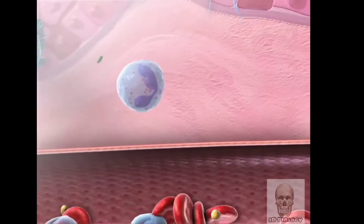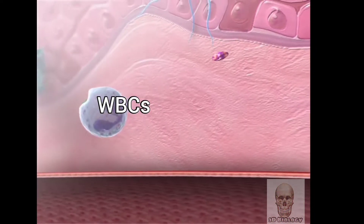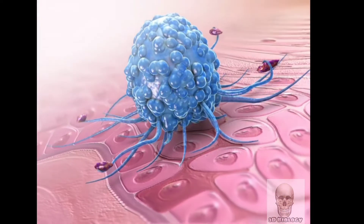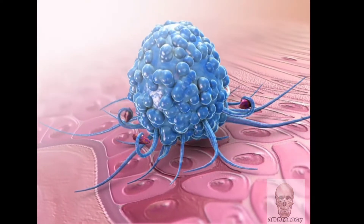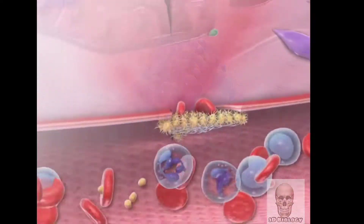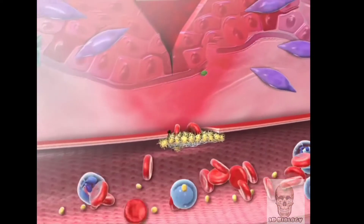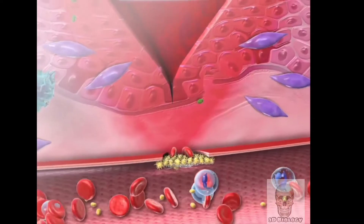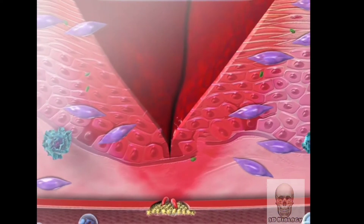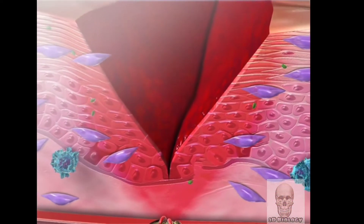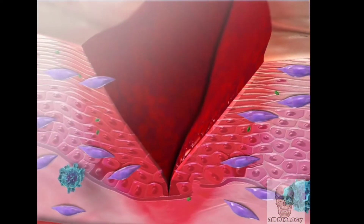White blood cells called neutrophils and macrophages work to consume bacteria and remove damaged tissue and debris. As bacteria and dead cells are removed, the proliferative phase of wound healing begins.